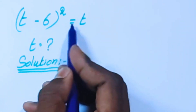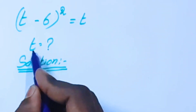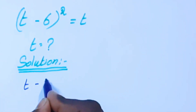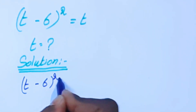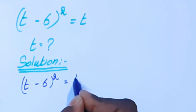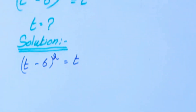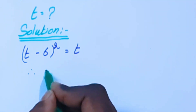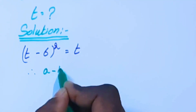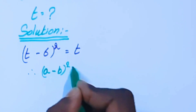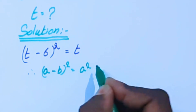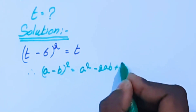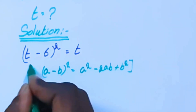Hello viewers, welcome to the channel. Today we are going to solve this problem: find t, given (t minus 6) whole power 2 equals t. We are going to apply the algebra formula: (a minus b) whole square equals a squared minus 2ab plus b squared.